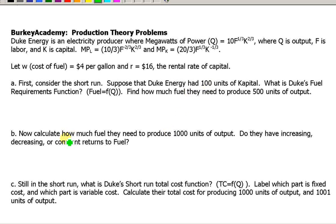Okay, let's do a quick production function example. In this example I'm assuming we're looking at Duke Energy, and they're producing power using two inputs, F for fuel and K for capital. Usually in these problems you'll have labor and capital, but I thought I would mix it up a little bit.